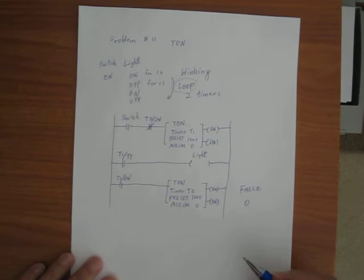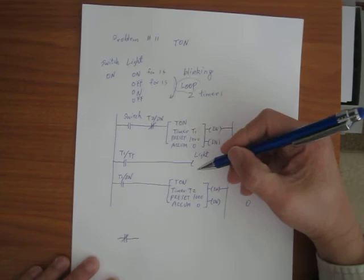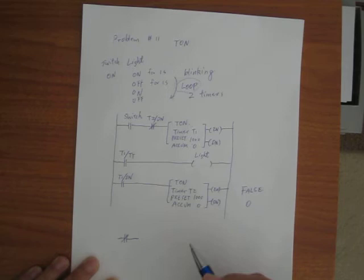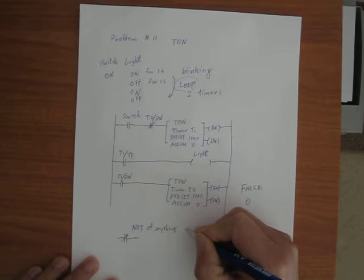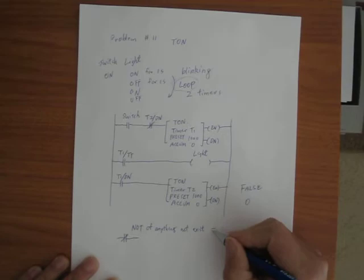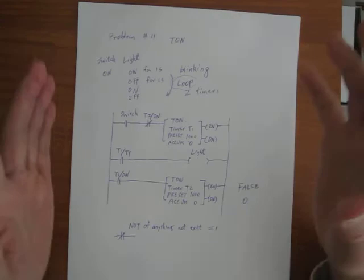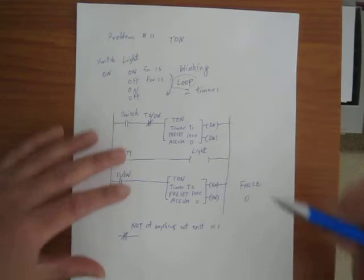This NOT gate — if you know how to use it, it's very powerful. All of that happens in a millisecond: turning T1 off and back on again. But you've got to be careful, because NOT of anything that doesn't even exist will be true — will equal 1. So if you made a mistake or referenced something that doesn't exist in the program, this will always be true. You've got to be careful, but this is a valid method to loop it.